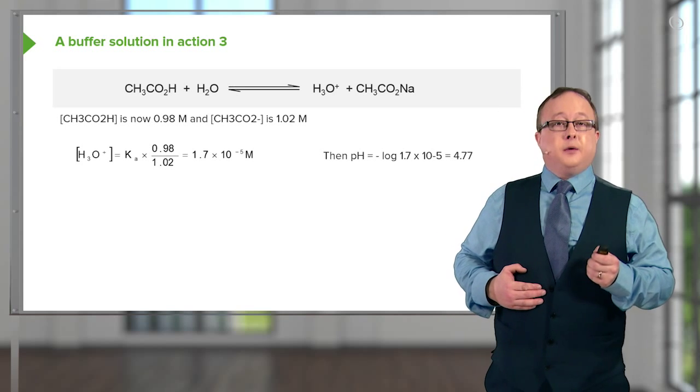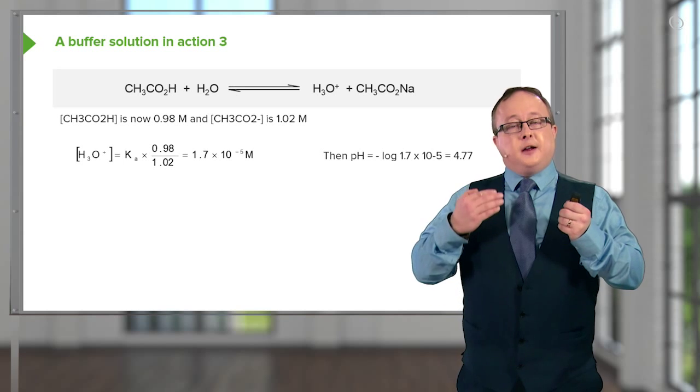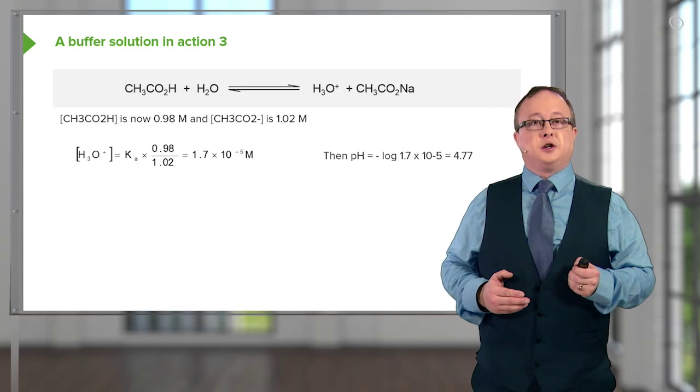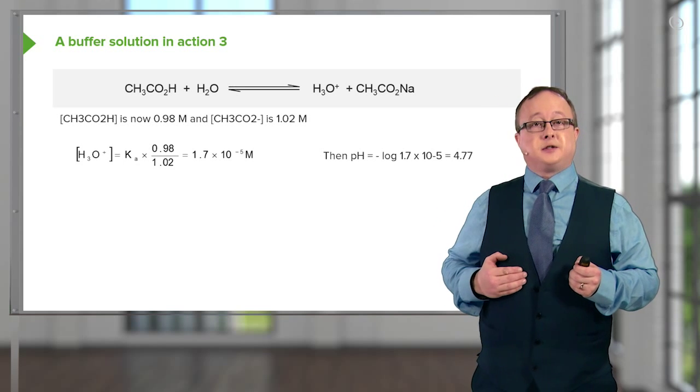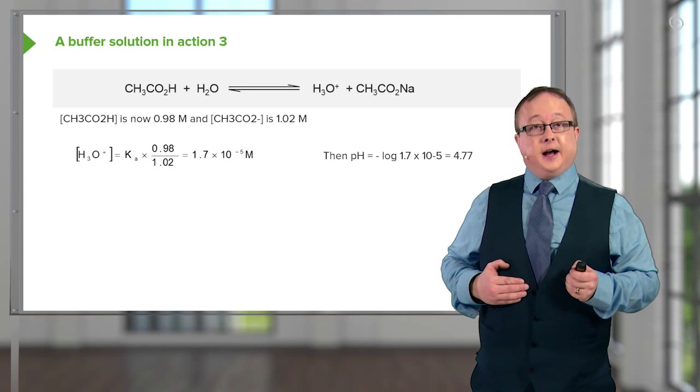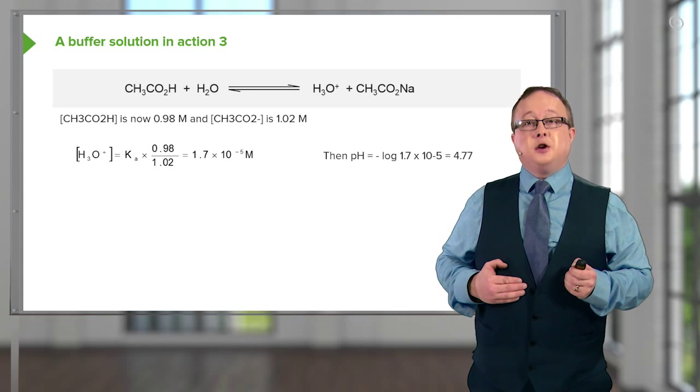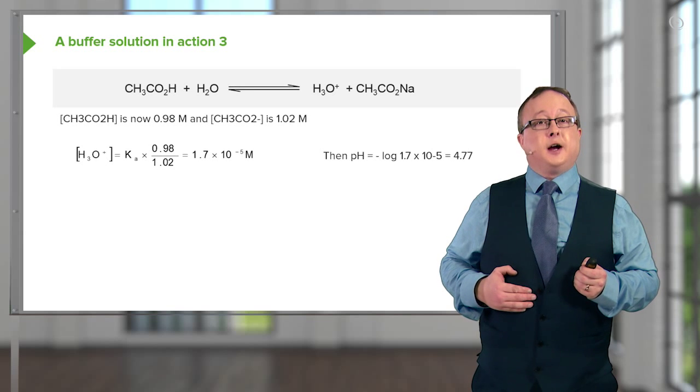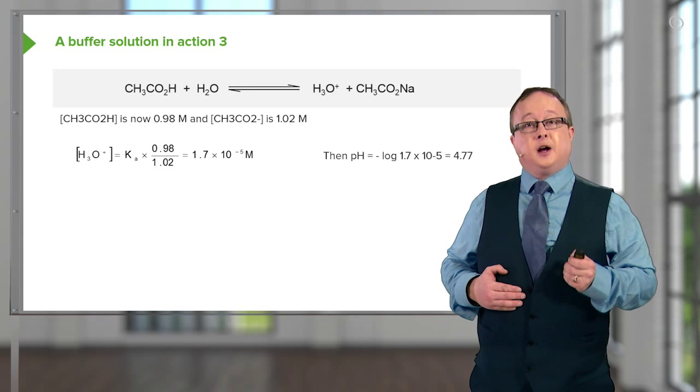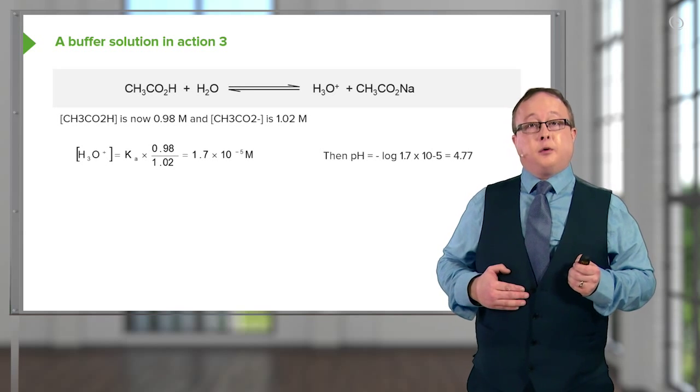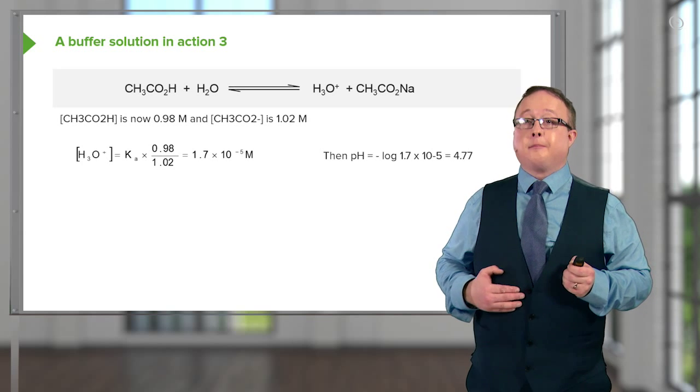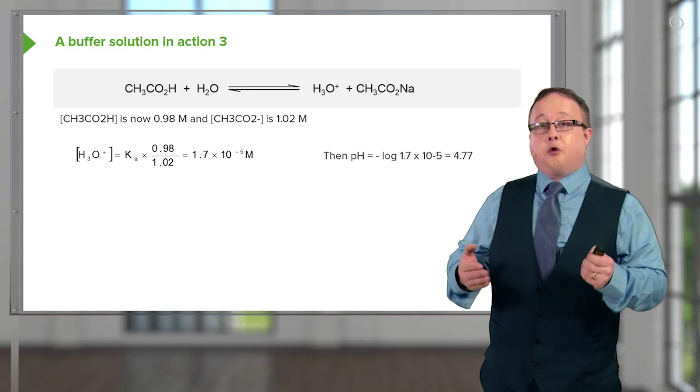As you can see, we now have a situation where the very small change in concentration of our sodium acetate and our acetic acid results in a minute change, in fact it's barely observable, change in the concentration of H+ which is available: 1.7 × 10^-5. This equates to a pH of 4.77.